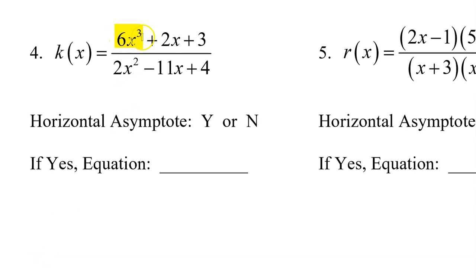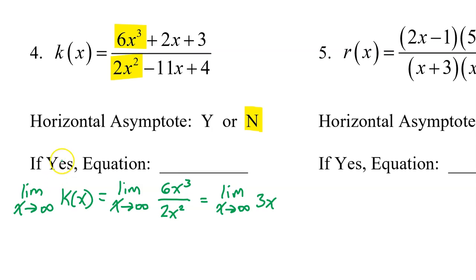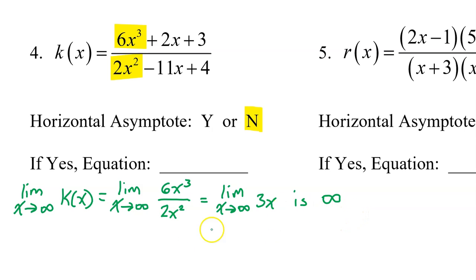Number 4, the degree of the numerator is bigger, so that means there will be no horizontal asymptote. If you forget the rule, you can do an analysis like this. Look at the right end behavior, which will equal this expression, which simplifies to this. But as x approaches infinity, 3 times x just gets bigger and bigger and bigger. So the limit is positive infinity, so no horizontal asymptote. There is a slant asymptote, which will equal y equals 3x.